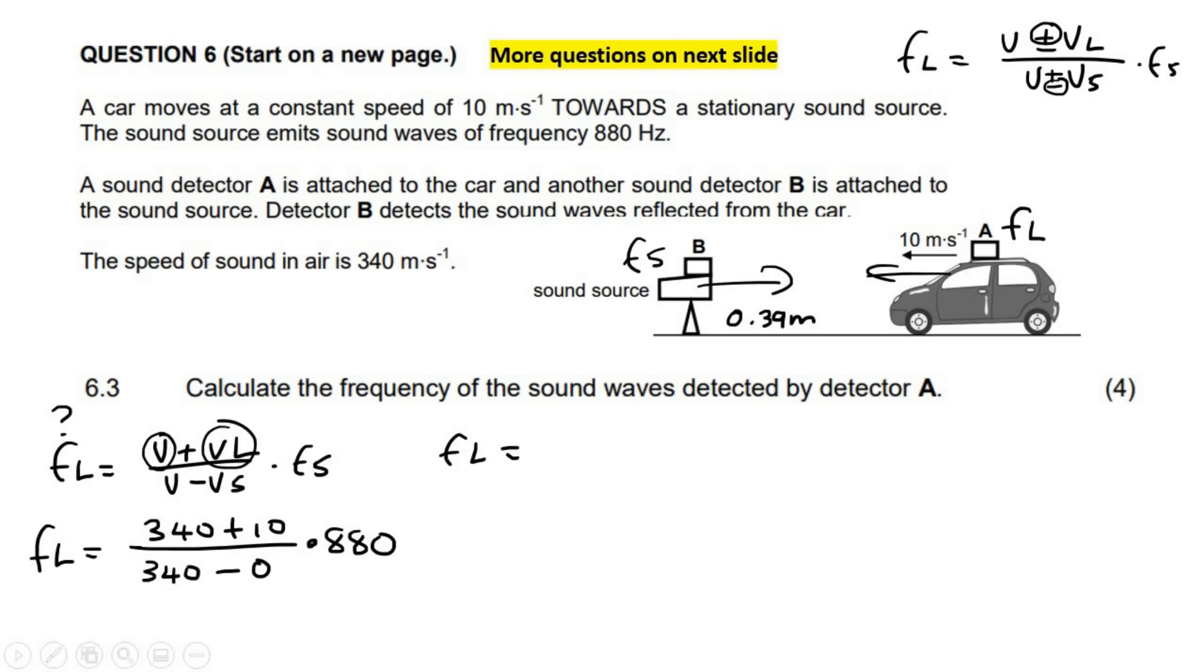Go ahead, type that all in on your calculator. It makes sense that the frequency that this little machine over here is detecting is larger than the frequency of the source, because as this car is traveling towards these waves, those waves are going to be squashed up. This little machine over here is going to feel like there's more waves, and that's why it's a slightly higher frequency. Remember, frequency says how many waves per second. So because the car is going towards the waves, it's making the waves squash up together, so it almost seems like there's more waves. So this thing is going to detect more waves than the 880. Hope that makes sense.